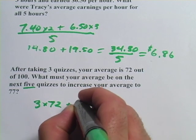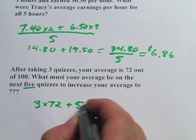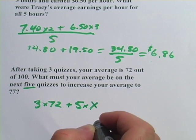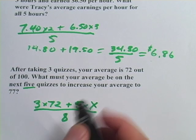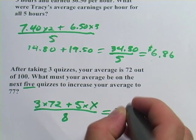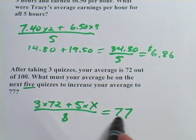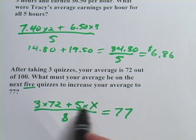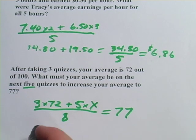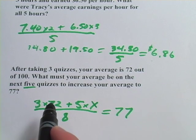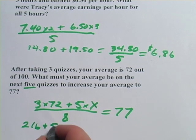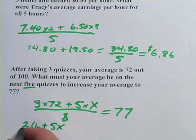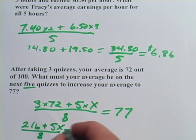We don't know what we have to average on the next five quizzes, so I'm going to write plus five times something we don't know — five times x. That all goes over eight. The other fact I know is that we want our average to be 77, so this equals 77. I'll simplify: three times 72 is 216, plus 5x — that's how they write it in algebra — divided by eight equals 77.